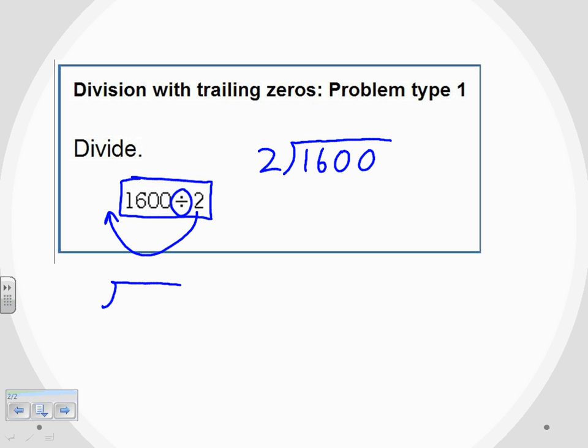I start off with the first digit on the left. That's the 1. And we first ask ourselves, does 2 go into 1? And in this case, 1 isn't big enough. It's not divisible by 2. So we go to the next digit, which is the 6.